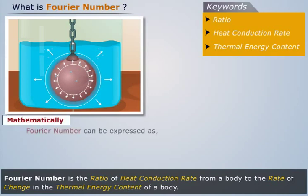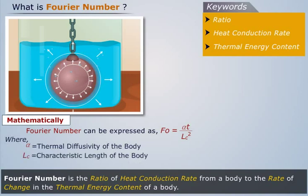Mathematically, Fourier number can be expressed as Fo = αt/L². Where α is the thermal diffusivity of the body, LC the characteristic length of the body, and T the time.